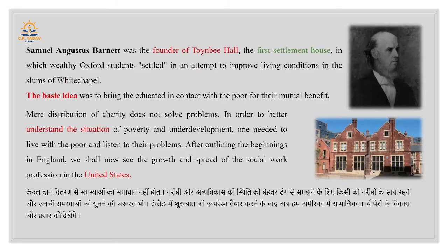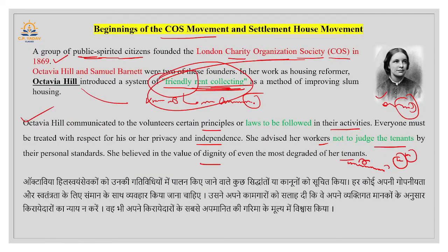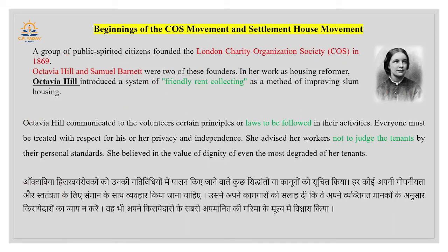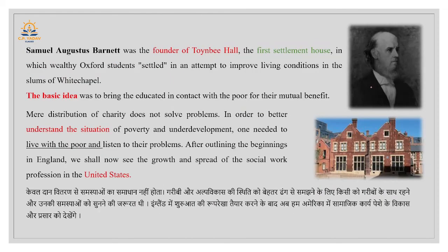Octavia Hill was one of the founding members of the COS movement in London. Next we discuss Samuel Barnett — his full name is Samuel Augustus Barnett. He was the founder of Toynbee Hall, which also appears in the exam. This was the first settlement house. You can see the picture of Toynbee Hall here.